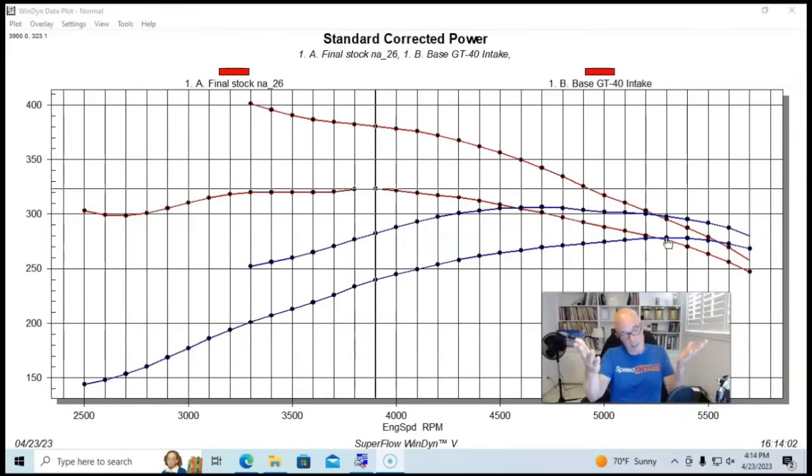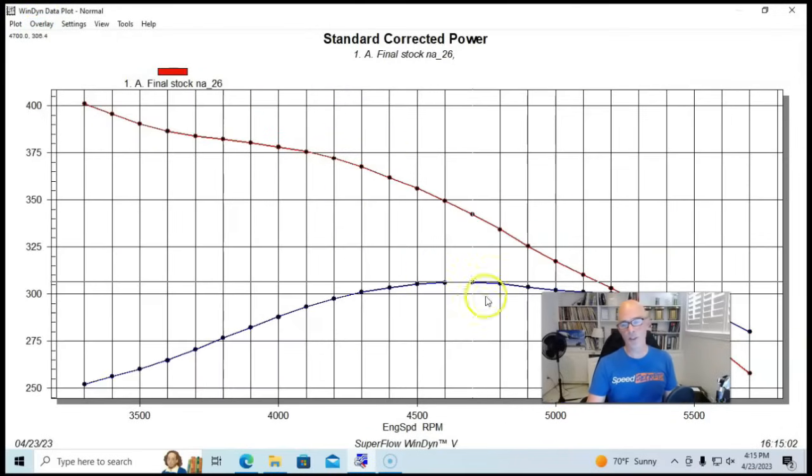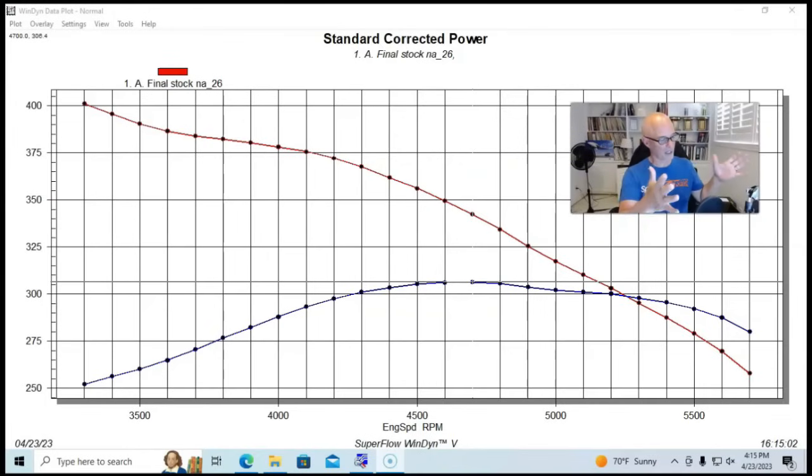I'm going to go ahead and get rid of our stock 302, or our stock-ish 302 with the GT40. Now the question is, Richard, what would happen instead of picking the increased displacement—the extra 45 cubic inches that we get from the 347 versus the 302—what would happen if we upgraded the 302 instead?